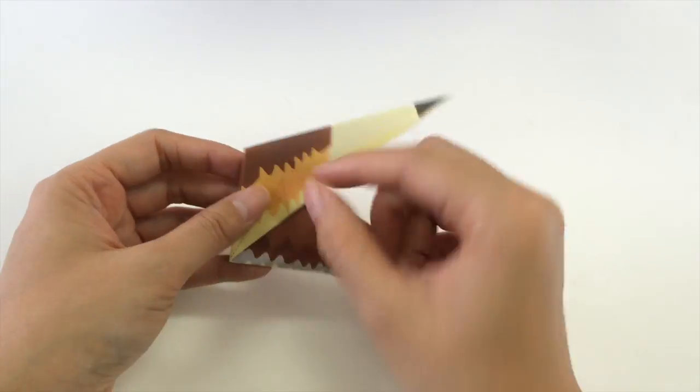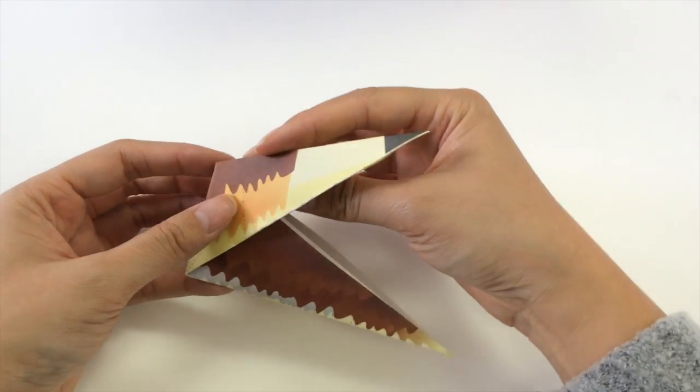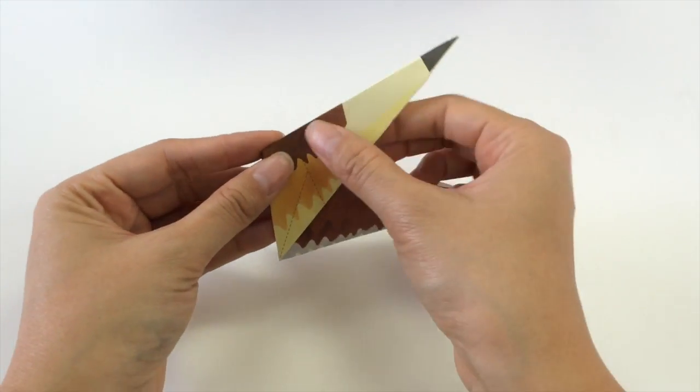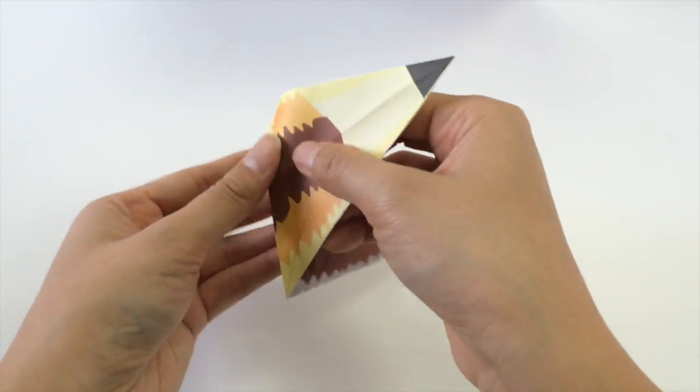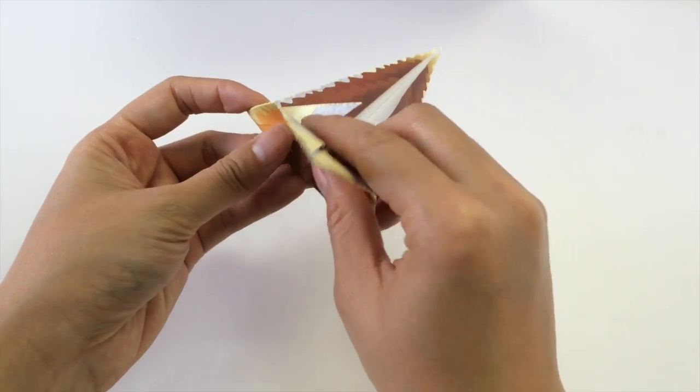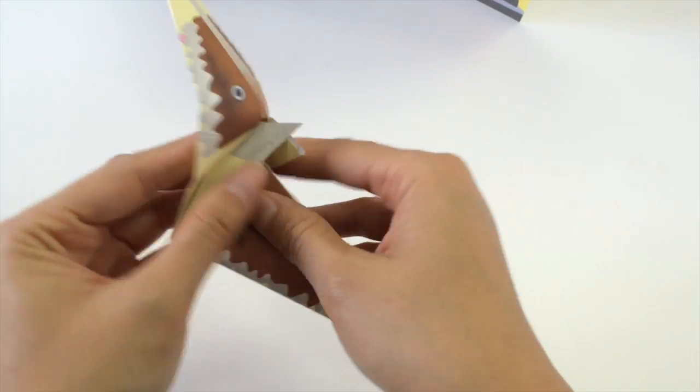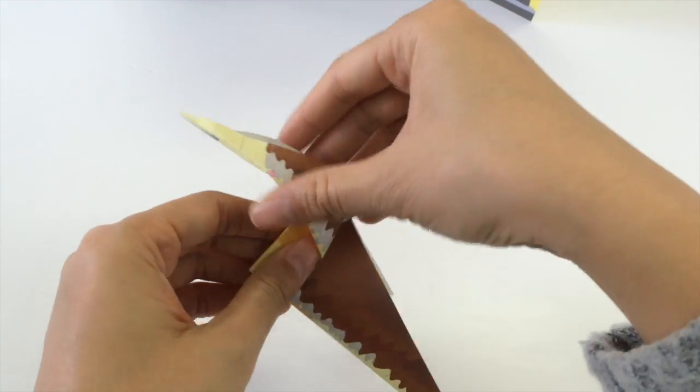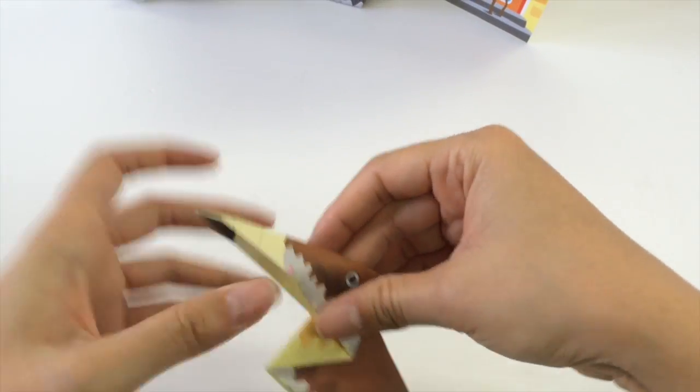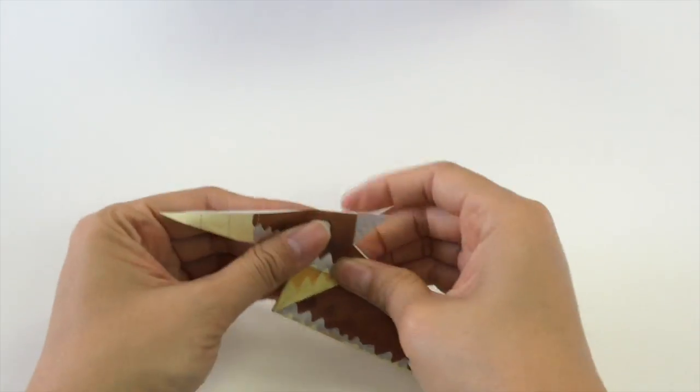Next, we're going to fold along this dotted line and we're going to do an outside reverse fold. So we take the whole thing, open it a bit and we fold outwards along that dotted line. And you will see the head of the dog.